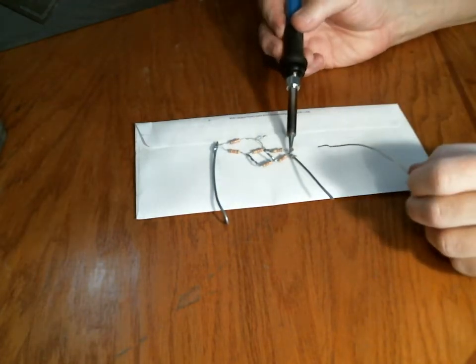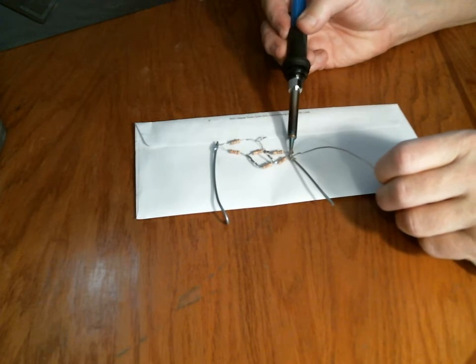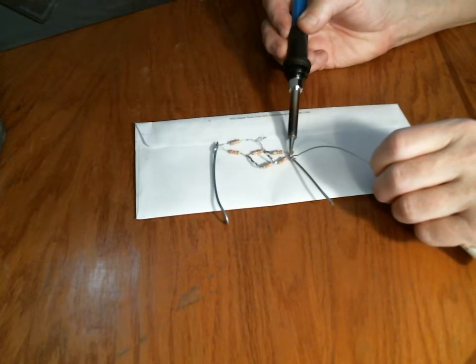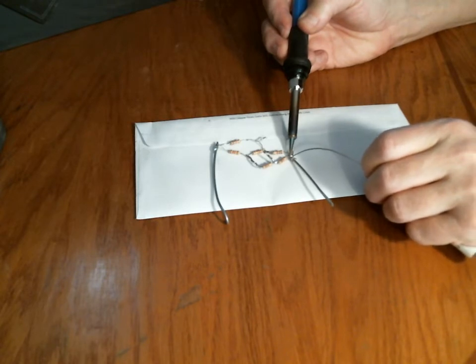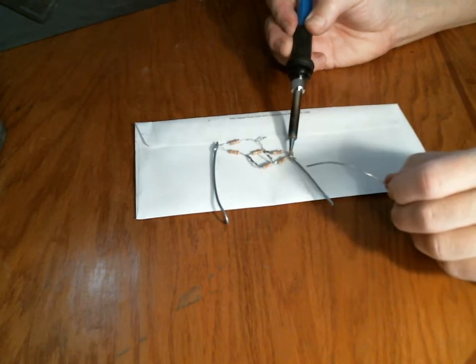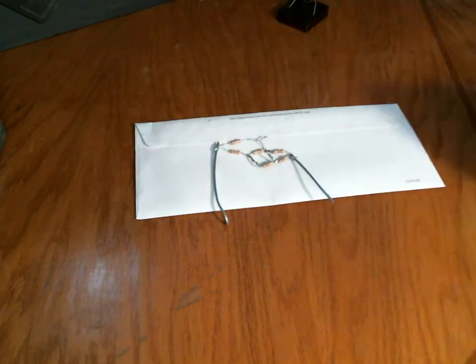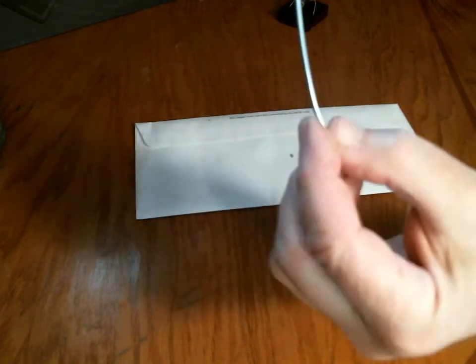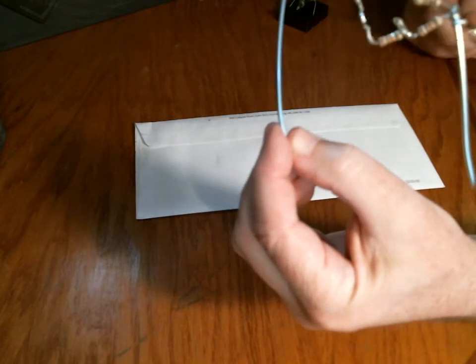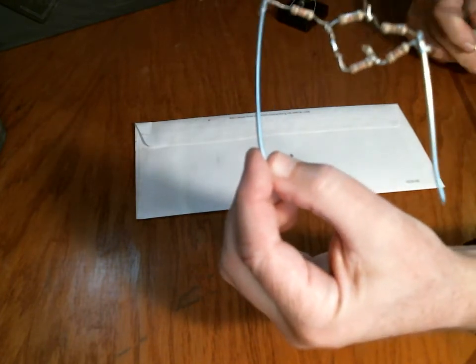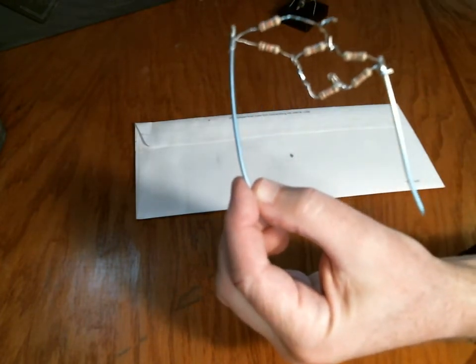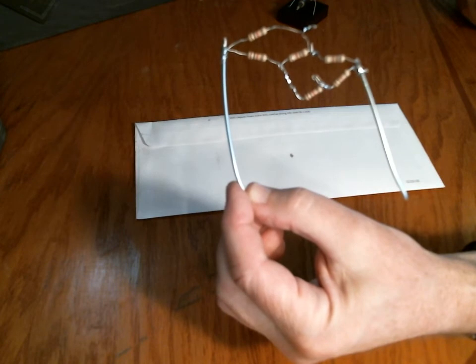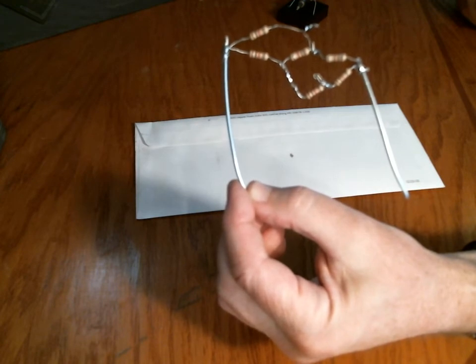So now I'm just finishing up soldering together a real world version of that circuit. This is meant to be compact and easy to work with. And the only difference between this and the circuit in the problem is that if you look at the color codes, you can see that they're brown, black, red, which means that these are all 1 kilo-ohm resistors.